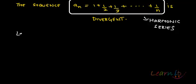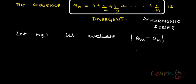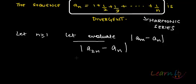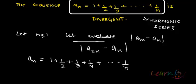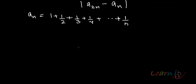Let n be greater than or equal to 1 and let's evaluate. When we look at Cauchy sequences, we evaluate |a_m - a_n|, the distance between terms. Let us evaluate a_{2n} minus a_n. What is a_n? It is given as 1 + 1/2 + 1/3 + 1/4 + ... + 1/n.